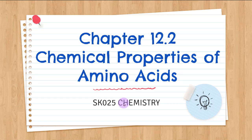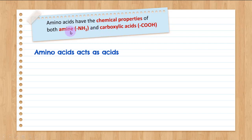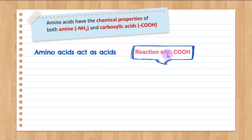Hello everyone, welcome to the video on Chapter 12.2 Chemical Properties of Amino Acid, SK025 Chemistry. Amino acids have two chemical properties corresponding to the amine NH2 functional group and the carboxylic acid COOH functional group. So amino acid can behave as both an acid and a base. First, let's look at amino acid behaving as an acid, where the reaction focuses on the COOH group.